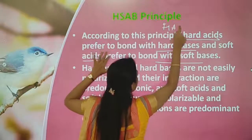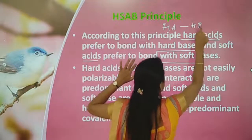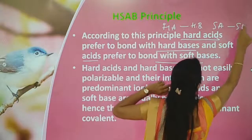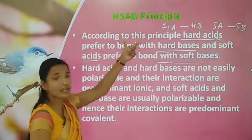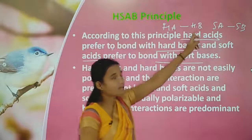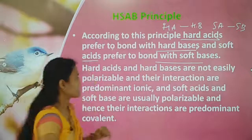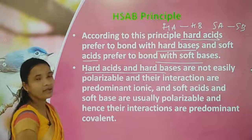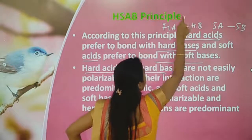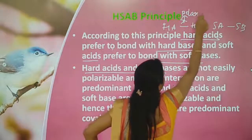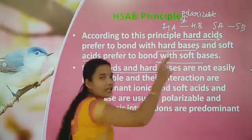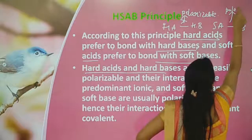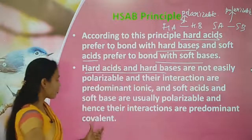Hard acids prefer to bond with hard bases, and soft acids prefer to bond with soft bases. Hard acids and hard bases are not easily polarizable, and their interactions are predominantly ionic. Soft acids and soft bases are easily polarizable, and their bonding is predominantly covalent.